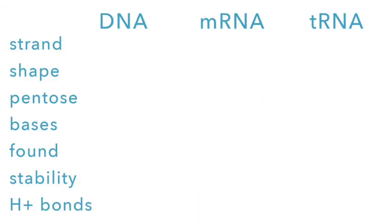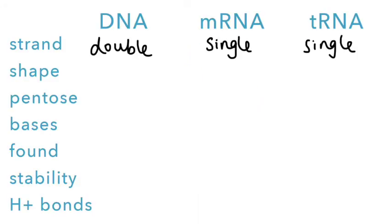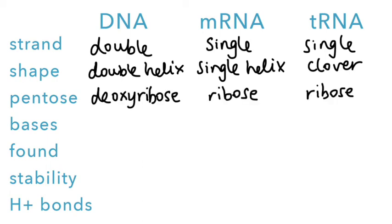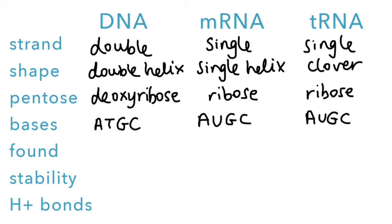To summarize: DNA is a double-stranded molecule, while mRNA and tRNA are single-stranded molecules. DNA forms a double helix, mRNA is a single helix, and tRNA forms a clover leaf shape. DNA has a pentose sugar called deoxyribose, while RNA molecules have ribose. Uracil replaces thymine in RNA.